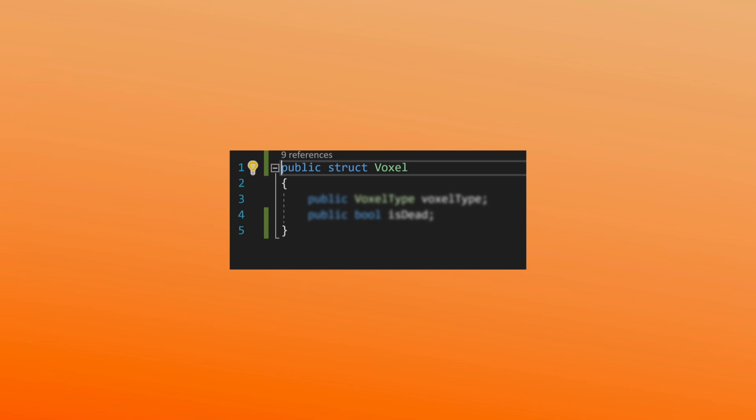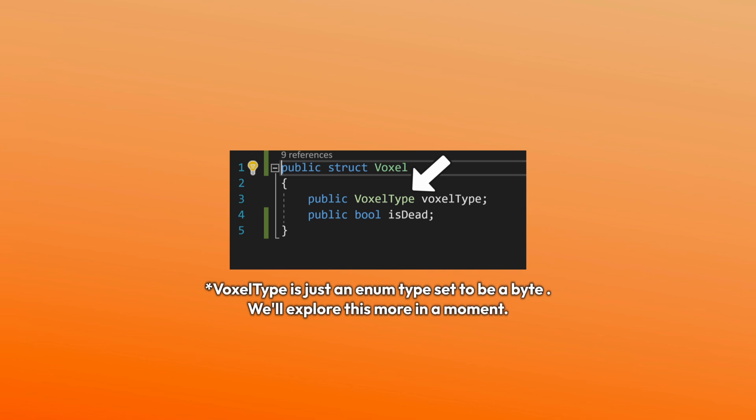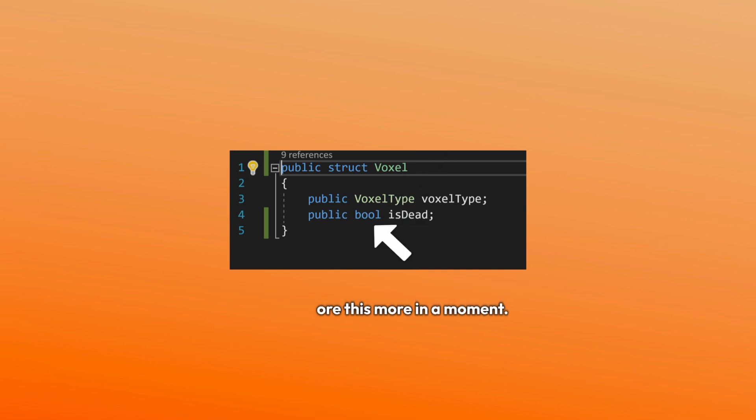The first step in building a voxel system is to decide on a data structure for the voxels. I'll be using a single byte to represent the voxel's material type, and a boolean to store whether the voxel is alive or whether it has been destroyed by a player or an AI agent. Because I'm storing the voxel type as a byte, we have the space for 256 types of voxel, but as we'll use zero to represent an empty voxel, this leaves us with space for 255 different types of voxel material.